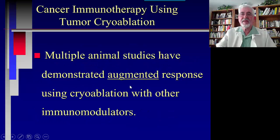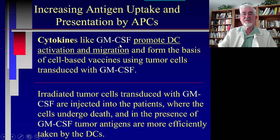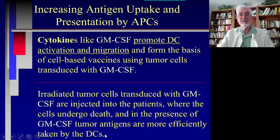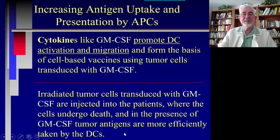Multiple animal studies have demonstrated augmented response using cryoablation with other immune modulators. Cytokines like GM-CSF — the immune modulator used in our rat experiment — promote dendritic cell activation and migration. Irradiated tumor cells transduced with GM-CSF are injected into the patient; in the presence of GM-CSF, tumor antigens are more efficiently taken up by dendritic cells to present antigens to cytotoxic T cells against the cancer.